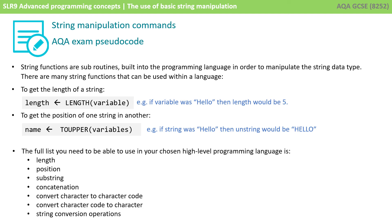In the exam, AQA are either going to present you with code in a high-level language or they're going to present it to you in their version of pseudocode. If they present it in pseudocode, we have a couple of examples of how they would do that here. From their specification, they state that string functions are subroutines built into the programming language in order to manipulate the string data type. They will write out the string manipulation command in capital letters, like LENGTH, and subroutines take parameters in brackets. So if variable was 'hello', that would get passed into the LENGTH subroutine, and it would return the value 5, which would then be assigned to a variable.